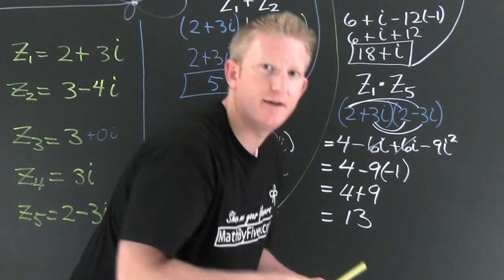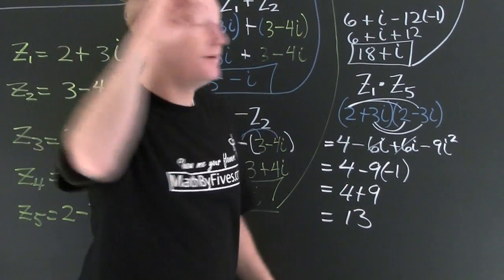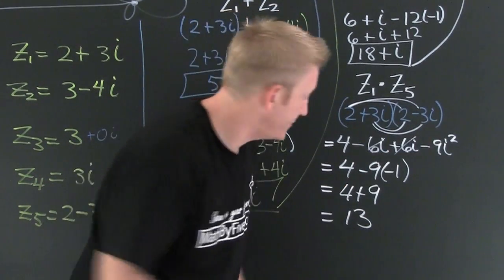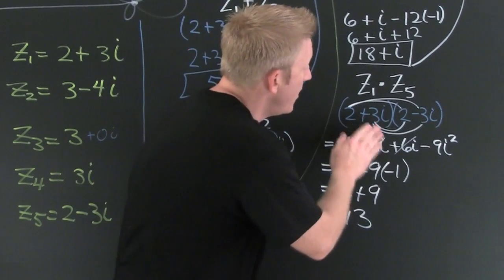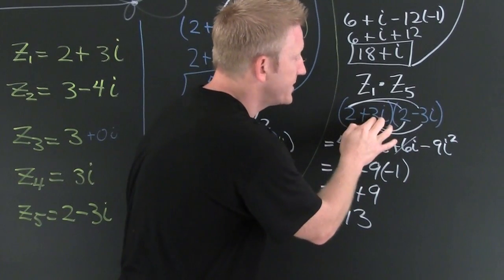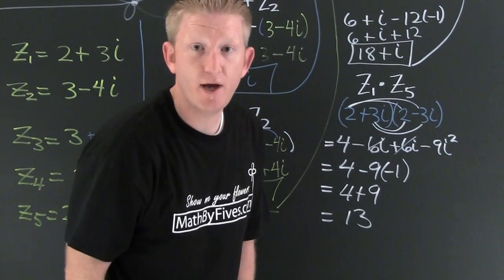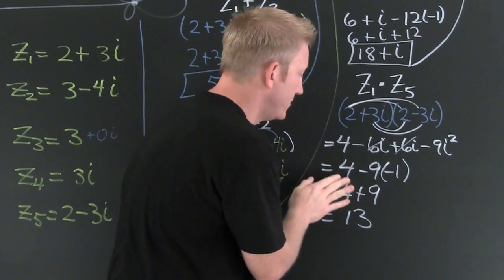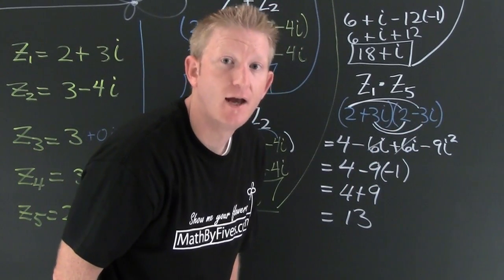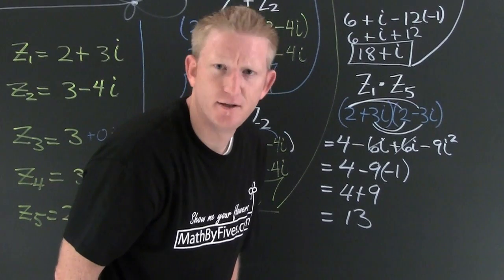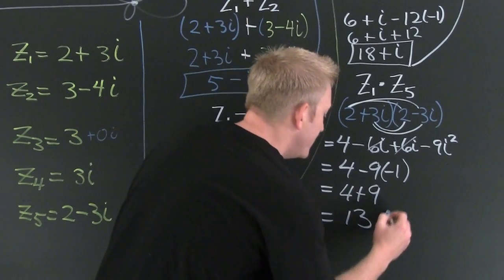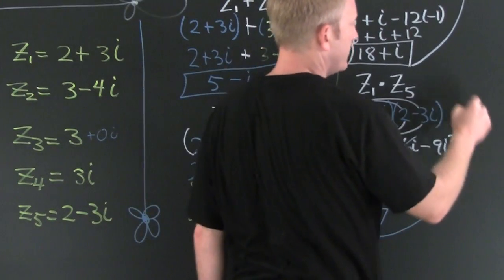So what just happened there? I took 2 complex numbers with imaginary parts and I was able to get rid of the imaginary parts. This is screaming difference of squares. Something plus something, something minus something. So every single time I'm going to get rid of the imaginary parts. I'm going to get a real part. Some would even say that this is the sum of squares.